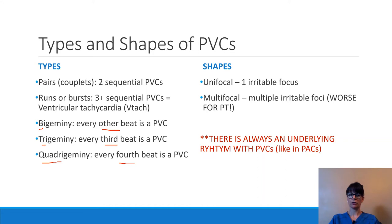PVCs can also be classified by shape: they can be unifocal or multifocal, meaning there is one irritable focus or multiple irritable foci in the ventricles. Unifocal means just one; multifocal means multiple irritable foci, which is always worse for the patient because the ventricle is irritated in more than one location. This usually means more symptoms and a higher likelihood of runs or bursts of ventricular tachycardia.